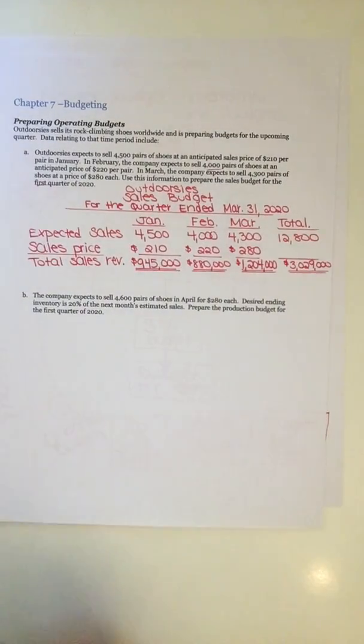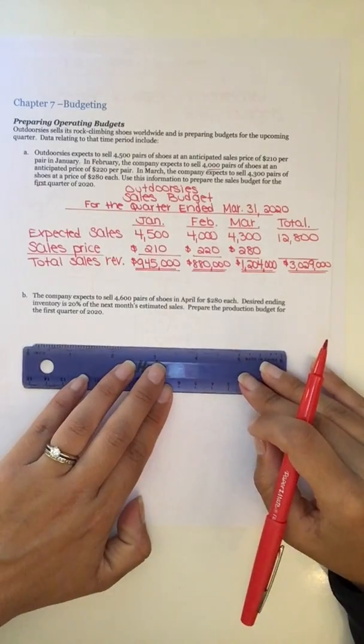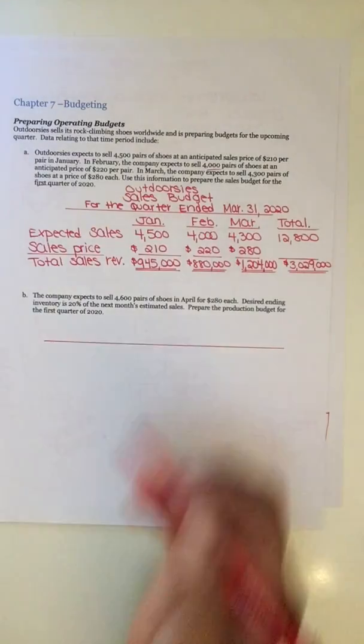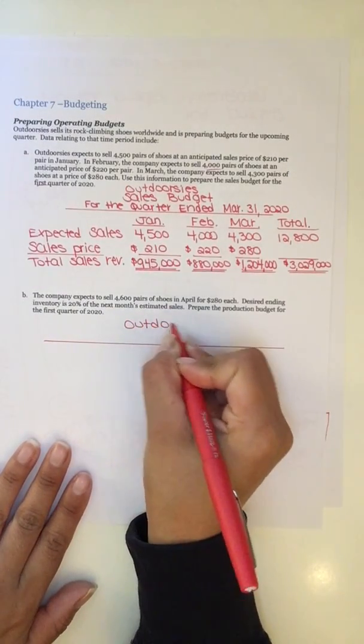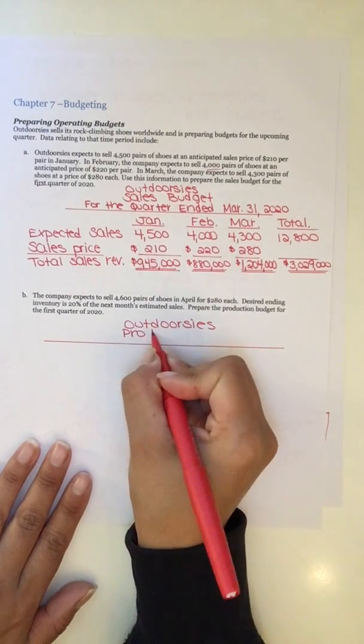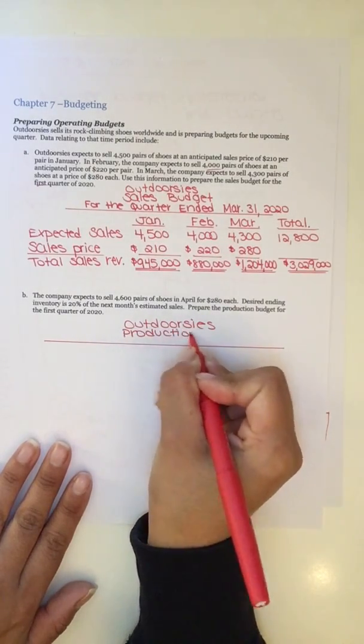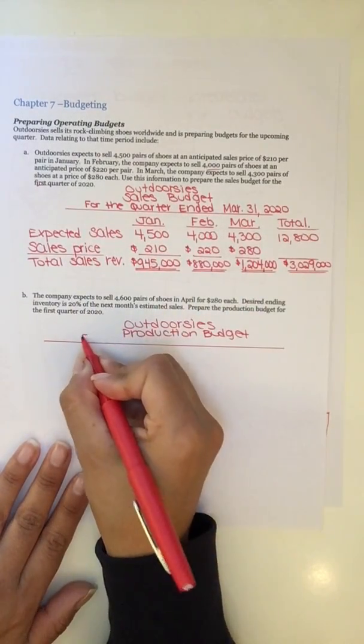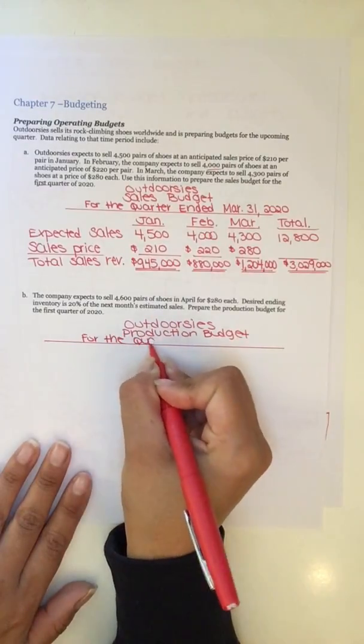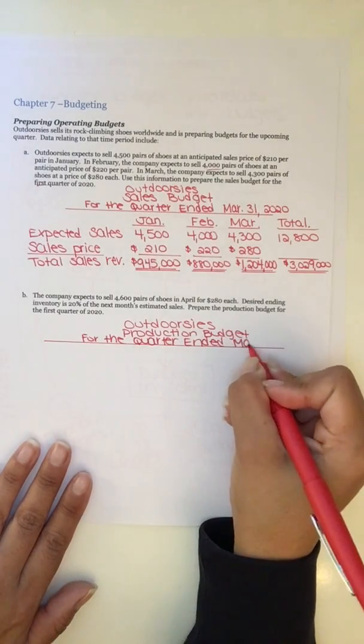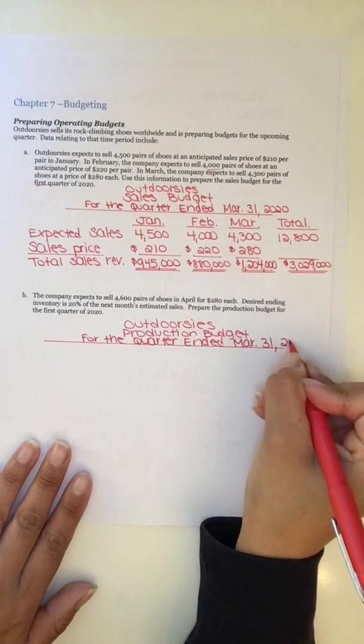Hello, welcome back. Let's go on to the production budget for Outdoorsy's. Go ahead and set up your header if you haven't already. Production budget. It's going to have the same date as that first one, for the quarter ended March 31st, 2020.